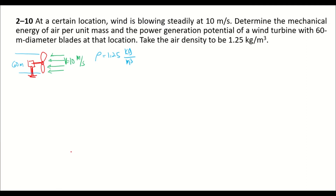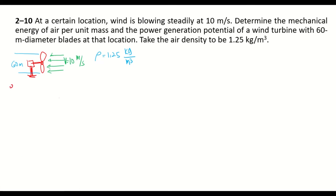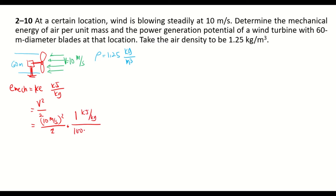As seen in the illustration, kinetic energy is the only form of mechanical energy the wind possesses, since the wind moves only in horizontal motion. The mechanical energy per unit mass equals the kinetic energy: V squared divided by 2. Substituting 10 meters per second: 10 squared divided by 2, times 1 over 1000 to convert to kilojoules, giving 0.050 kilojoule per kilogram.